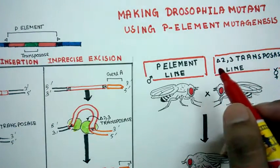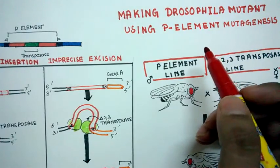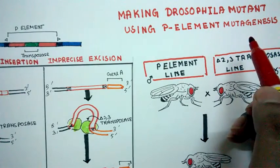Hi, in this video I will be talking about making Drosophila mutant using P-element mutagenesis.